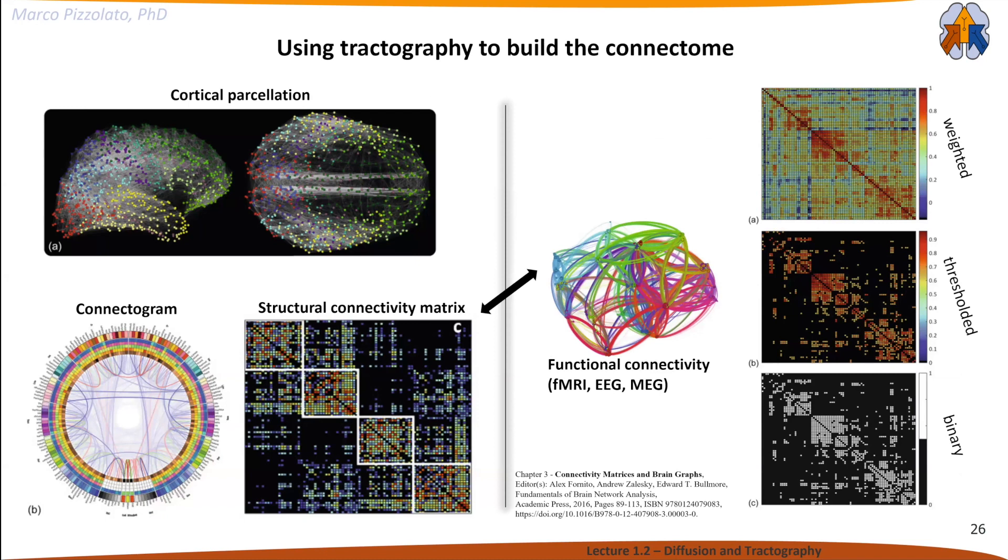I'll conclude here. I hope I managed to give you an intuition of where the diffusion signal comes from—from the microstructure of brain tissue—how we sample in many directions to obtain the fiber orientation distribution function, then apply tractography to create structural connectivity matrices which can be bridged with functional counterparts. If you want to read more, there's a nice chapter reported below that I really recommend.